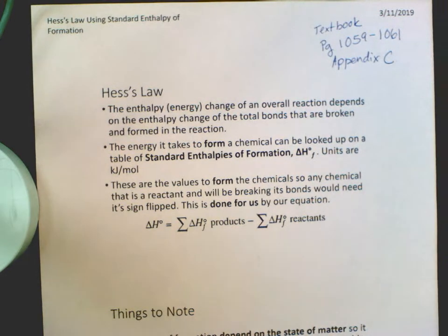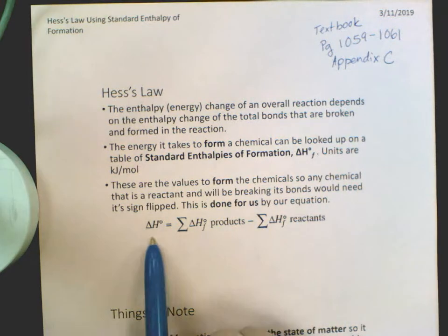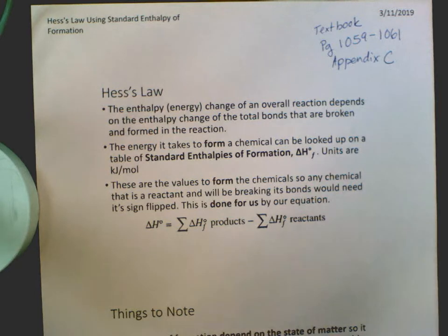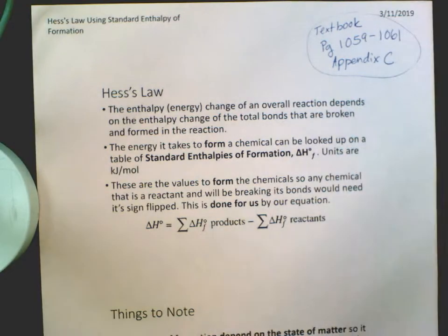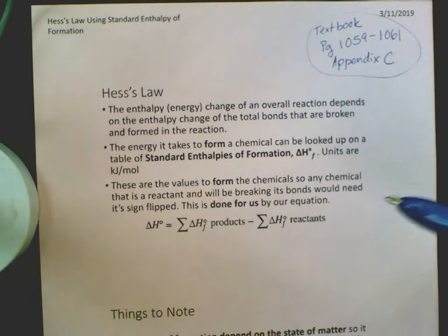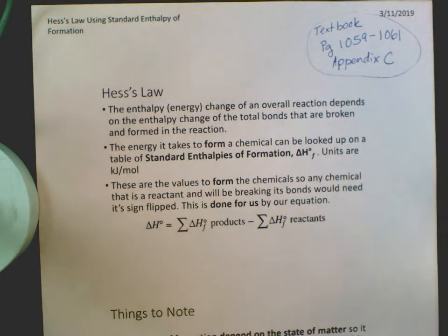We are going to look at Hess's Law Part 2 and a different way of approaching finding the enthalpy change for our reactions. We've looked at piecing together different reactions to get an overall reaction and adding up the delta H values. This method is a little more straightforward. It is still Hess's Law, still looking at getting the total enthalpy of an overall reaction, just in a different way.